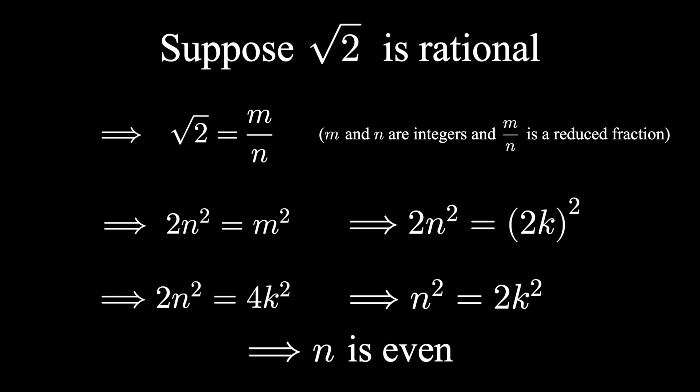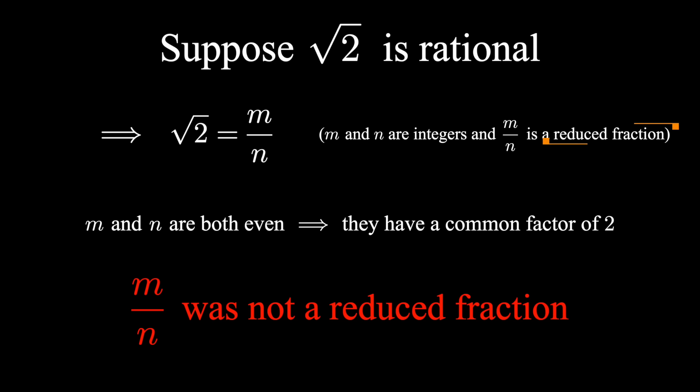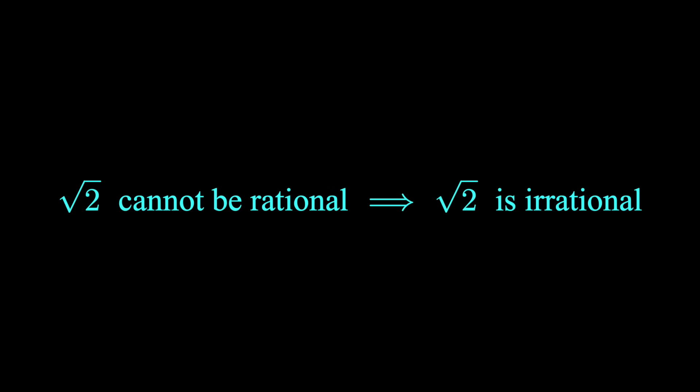How do we wrap this up? M and n are both even. They're both divisible by 2, and so their fraction, m over n, is not written in lowest terms, contradicting our assumption in the first place that root 2 is rational. And so of course, we conclude root 2 is irrational.